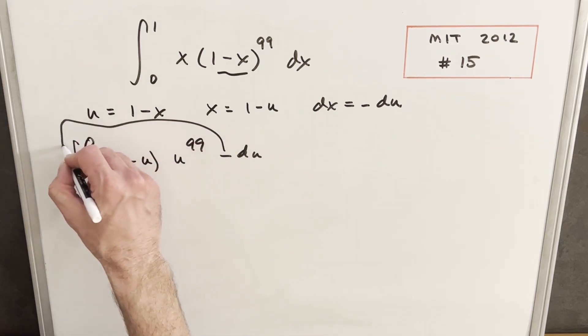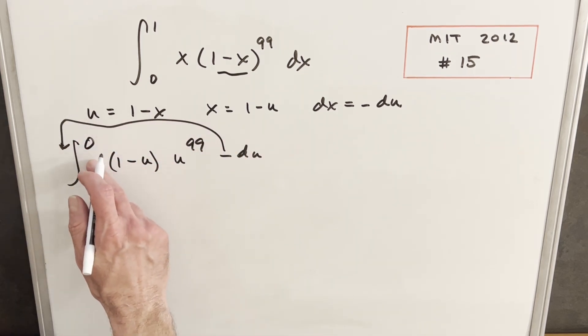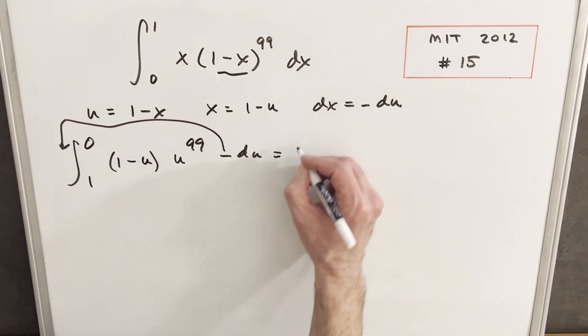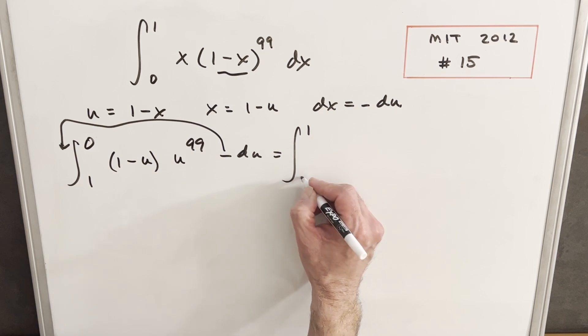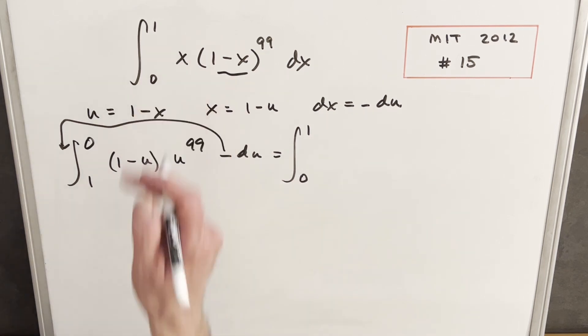From here, all I'll do is we'll take our negative sign and bring it up front, but we're just going to use that to flip the bounds. So we have that property of the definite integral that allows us to do that. So I'll rewrite this and we'll have our bounds as 0 to 1, so our bounds back the way it was.